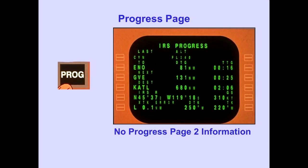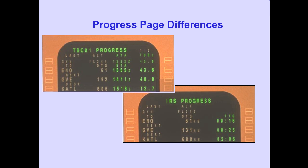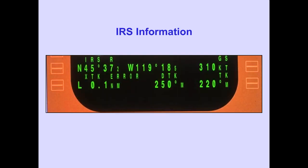Pushing the Progress key displays the IRS Progress page. Progress page 2 is not available. The waypoint information is similar to the normal progress page, except time to go is displayed instead of ETA, and there is no fuel information. IRS cross-track error, desired track, and track for the respective IRS are also displayed on the progress page.